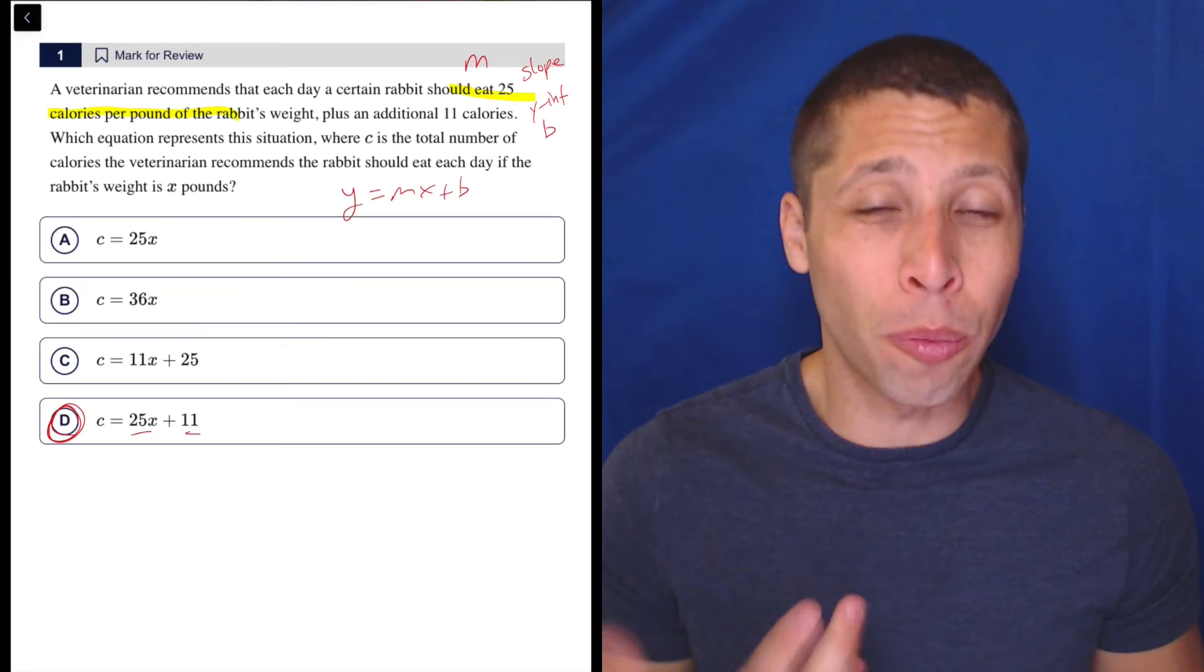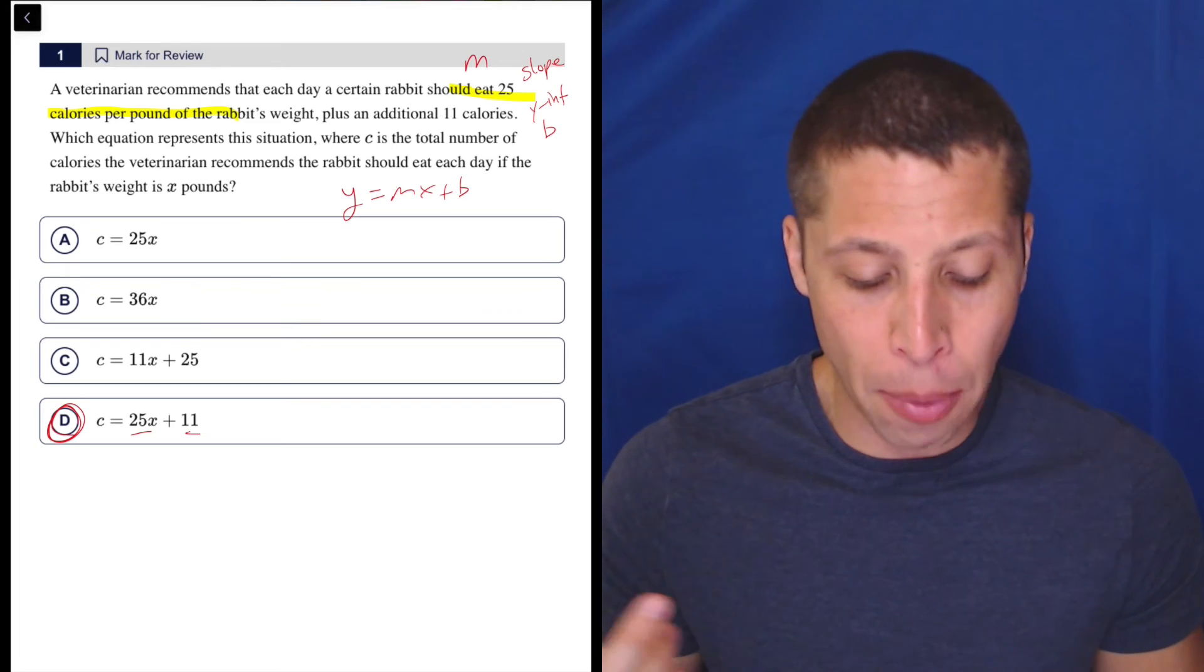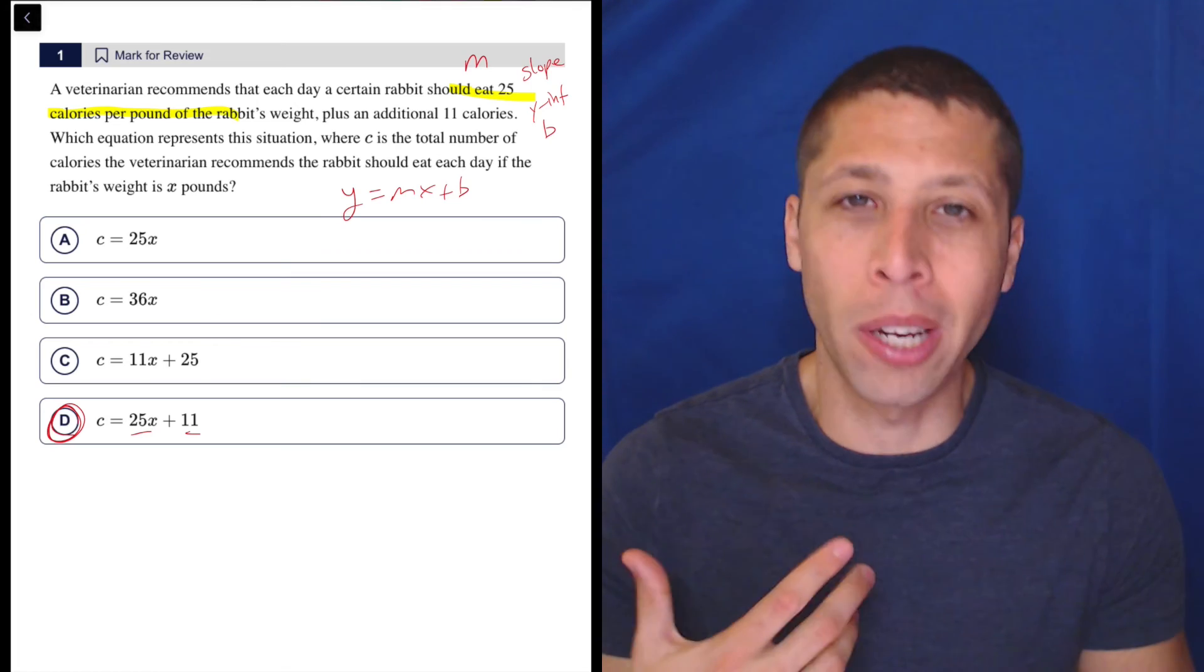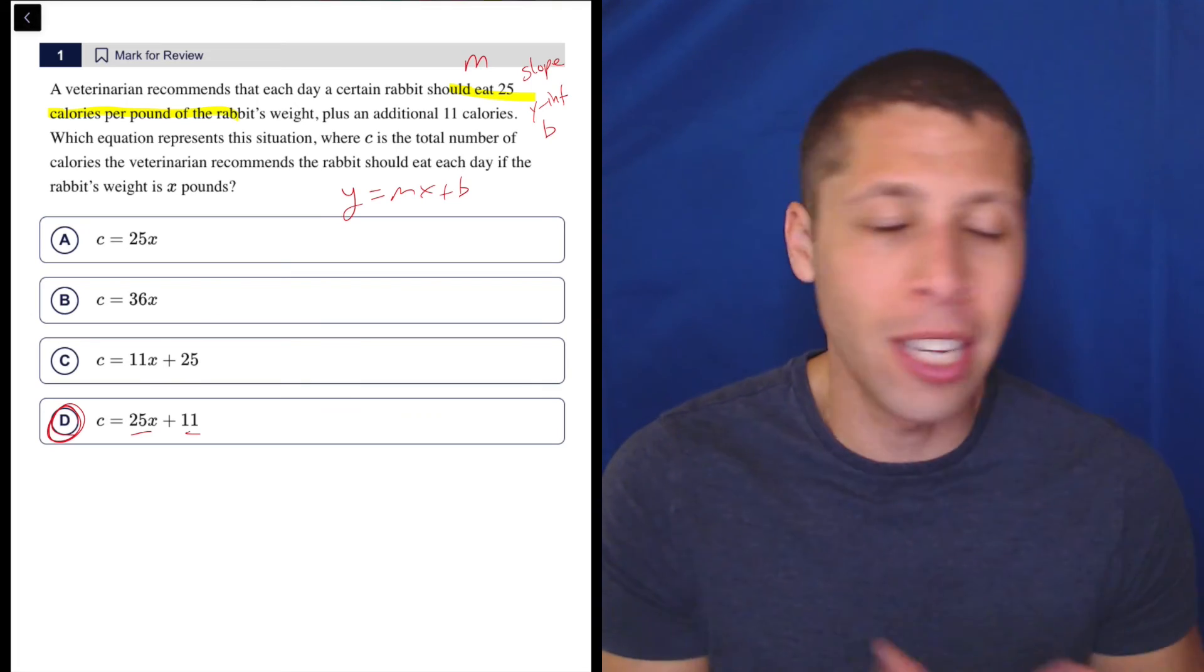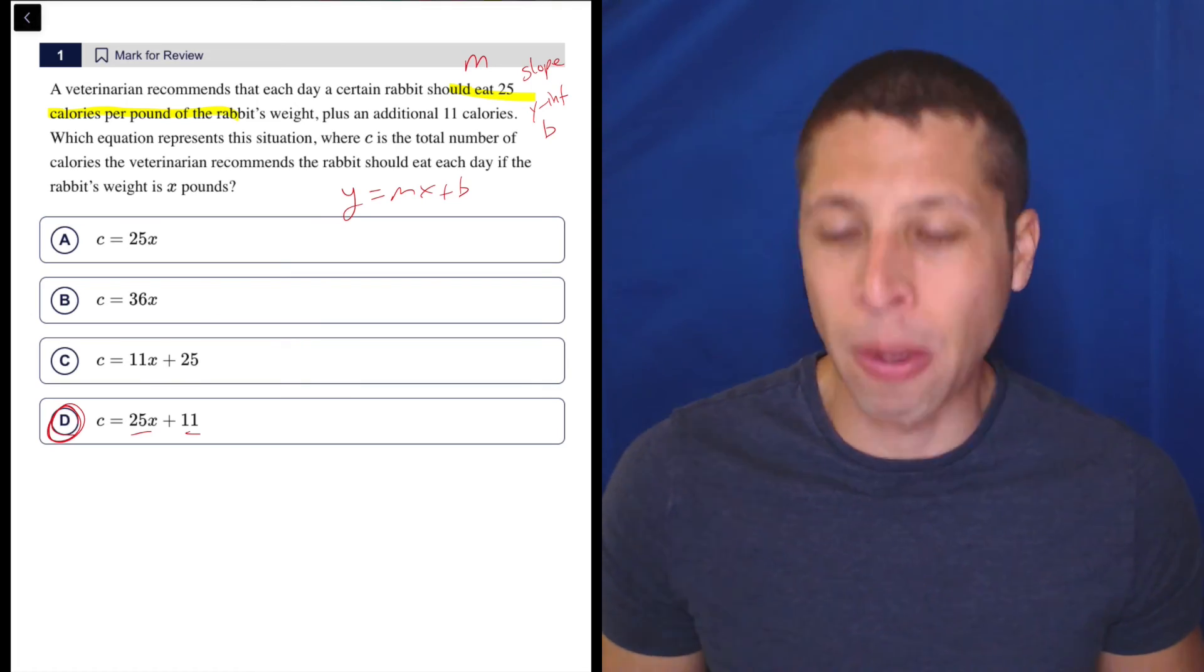If you really wanted to, you could arithmetize here. You could come up with a hypothetical weight for the rabbit and then follow the story to come up with how many calories it should eat. But I don't recommend that here. This is much easier than that.